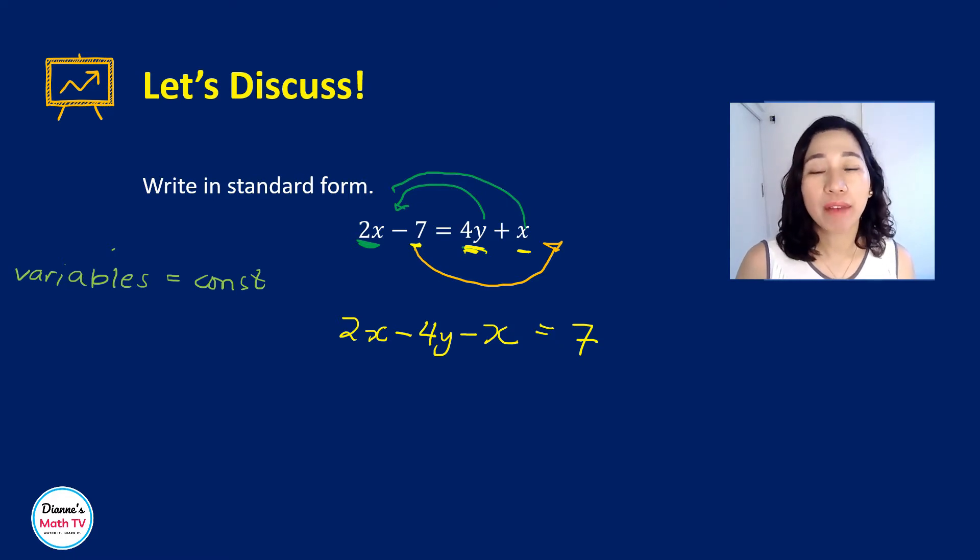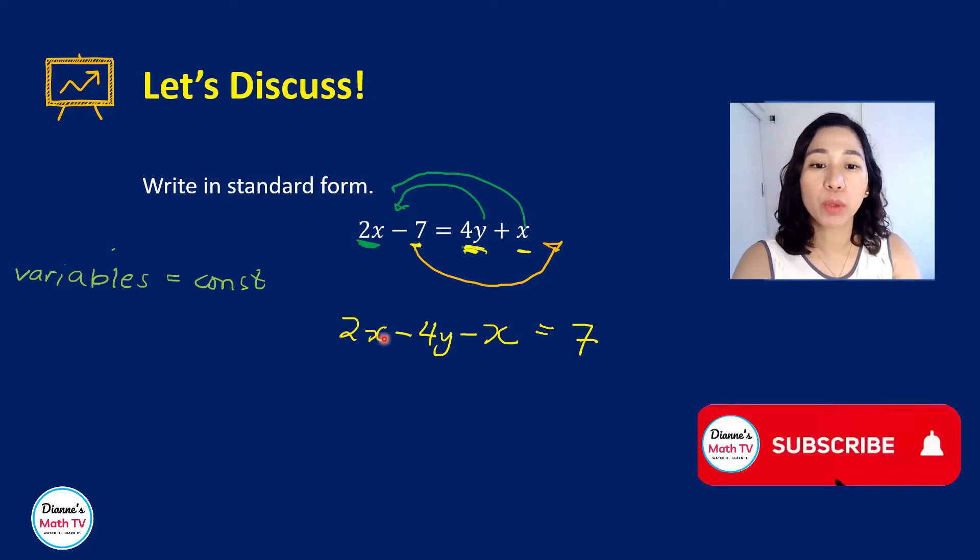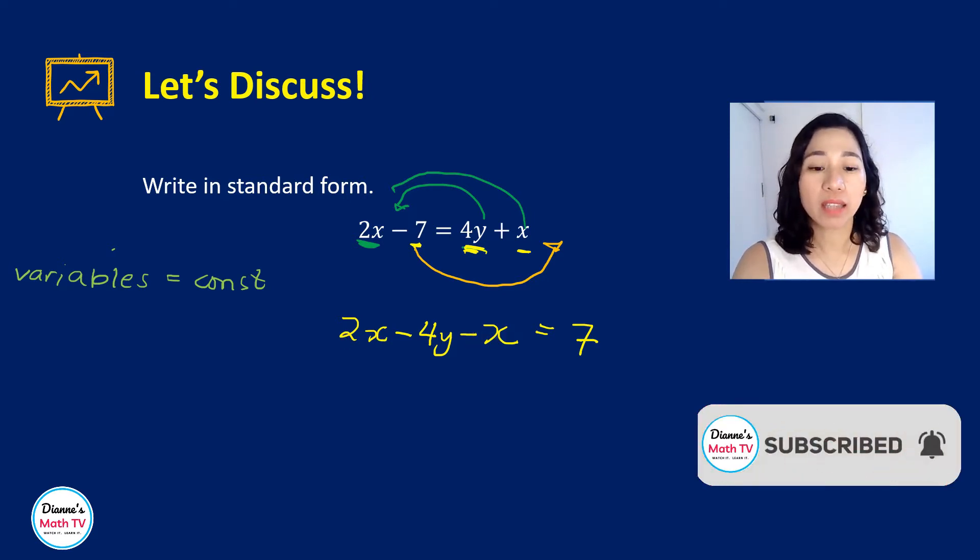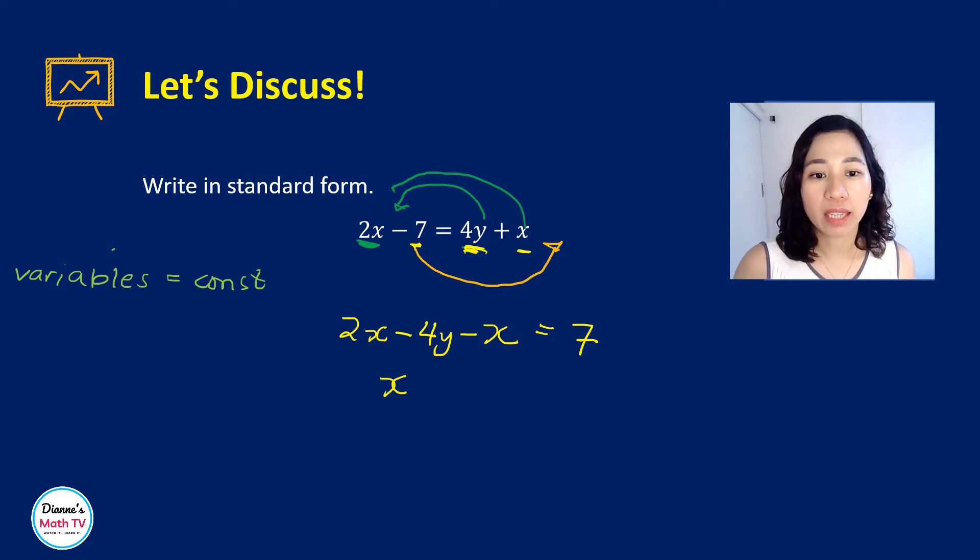And then we just have to simplify our equation. We have 2x minus x that is equal to x, and then I still have my minus 4y is equal to 7. So that's the standard form of this linear equation.